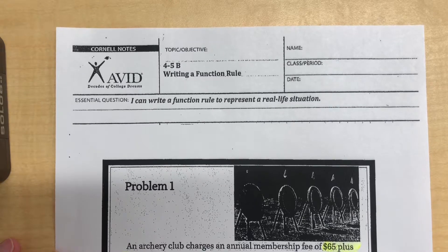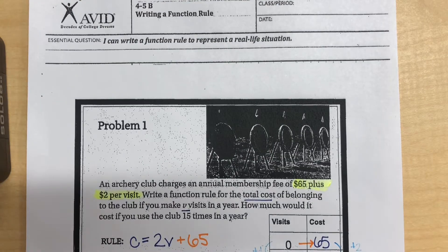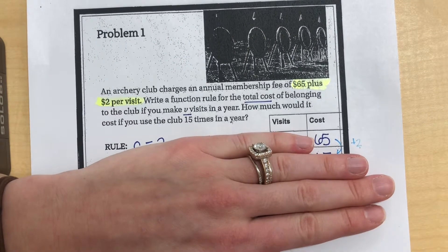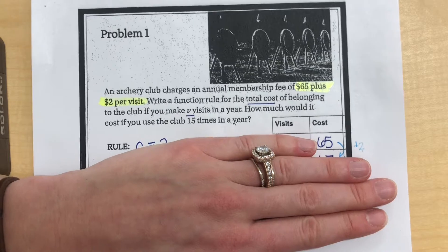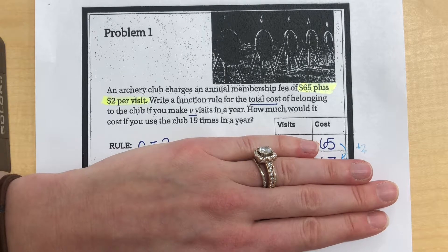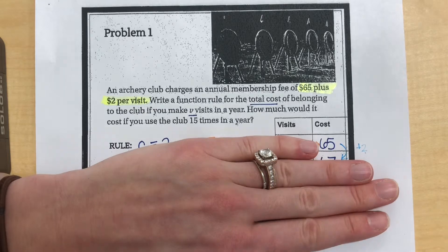Welcome to your video on 4.5b writing a function rule. Problem number one: an archery club charges an annual membership fee of $65 plus $2 per visit. We're going to use that to complete the table and write a function rule for the total cost of belonging to the club if you make V visits in a year. How much would it cost if you used the club 15 times in the year?